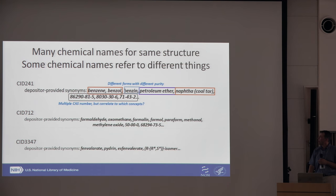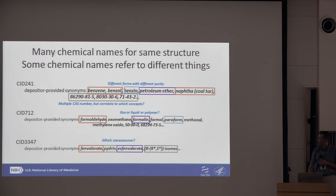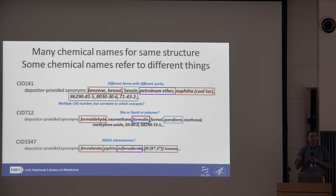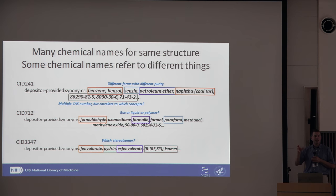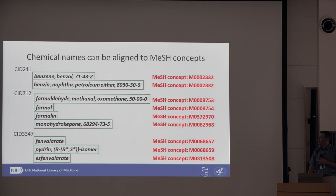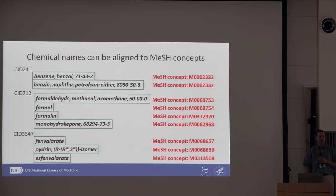We can look at different structures and find different concepts within the provided names. For example, if you're working with formaldehyde, you have formalin — formalin is in water. At 40% it's flammable; if you go below 32%, it becomes inflammable. So if you have health and safety content and you're trying to describe it, you need to understand the state, purity, and so on. We've been harnessing MeSH to group these chemical names and use these MeSH concepts to pull apart the different representations — not just using a chemical structure, but using other chemical concepts to describe the content.